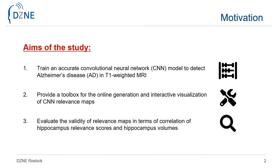Convolutional neural networks are able to detect Alzheimer's disease in T1-weighted MRI scans with high accuracy. However, they are not implemented in clinical routine for diagnosing dementia. One important reason is the lack of comprehensibility, which is the result of the black-box character of CNN models.